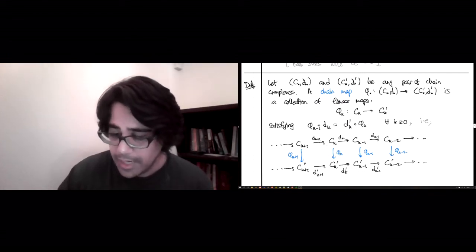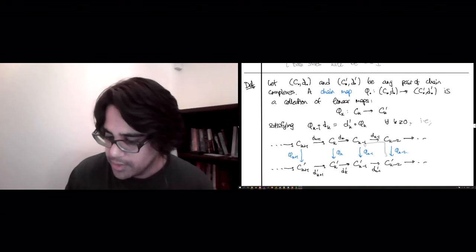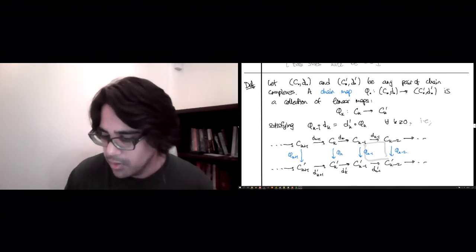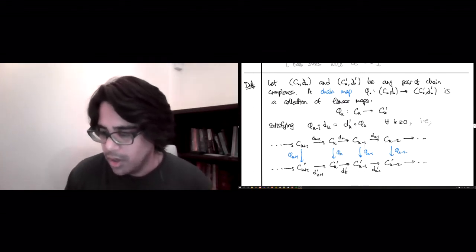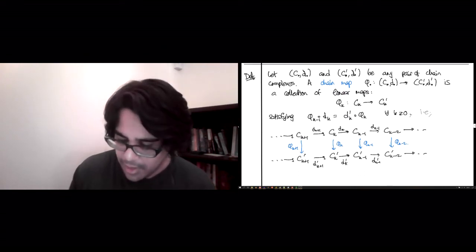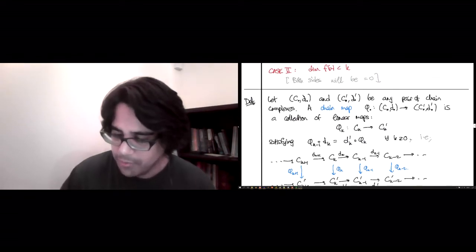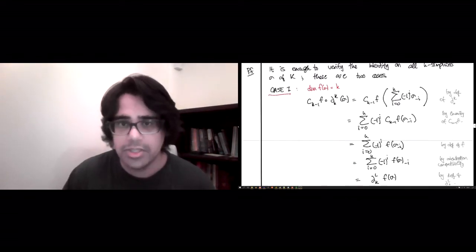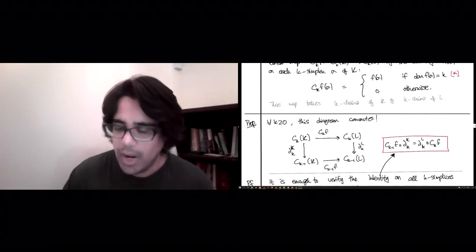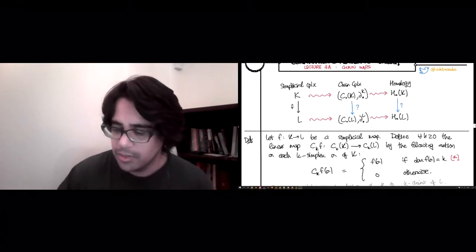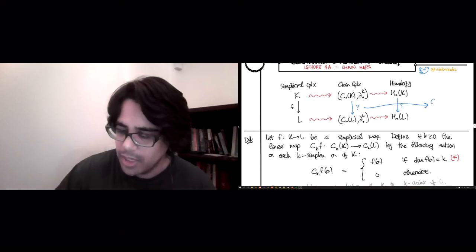Similarly, if you did this in any other square, you would get the same linear map. So this is the definition of a chain map, and this is what goes in to the first arrow with a question mark that we had way at the beginning of the lecture. So this answer is chain map.